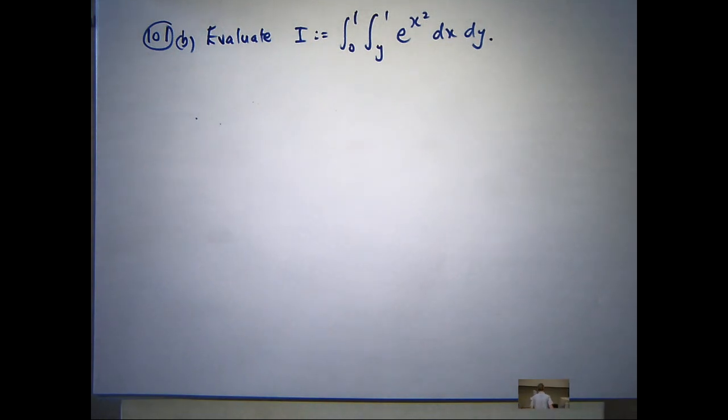Now, why can't I do that integral straight away? Why can't I just do the inside integral and then the outside integral? Why can't I just integrate e to the x squared with respect to x? What's the integral of e to the x squared? The anti-derivative. It's not e to the x squared all over 2x.